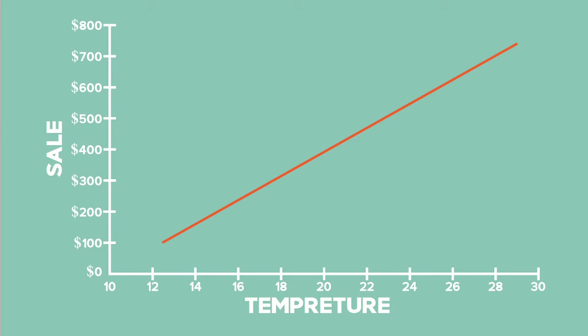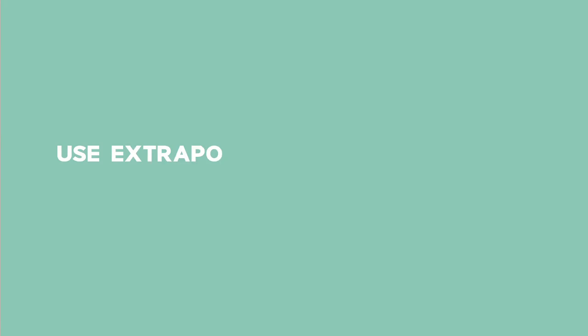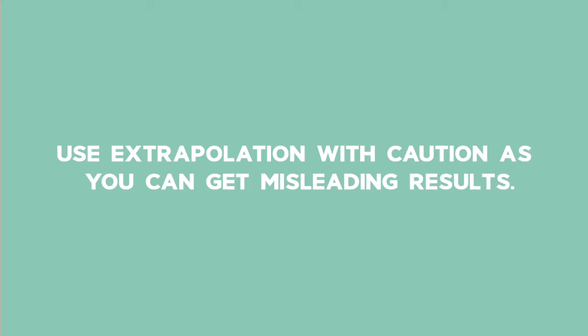Using linear extrapolation, we can estimate the sales at 29 degrees Celsius, which is outside the data range, to be $740. Use extrapolation with caution, as you can get misleading results.